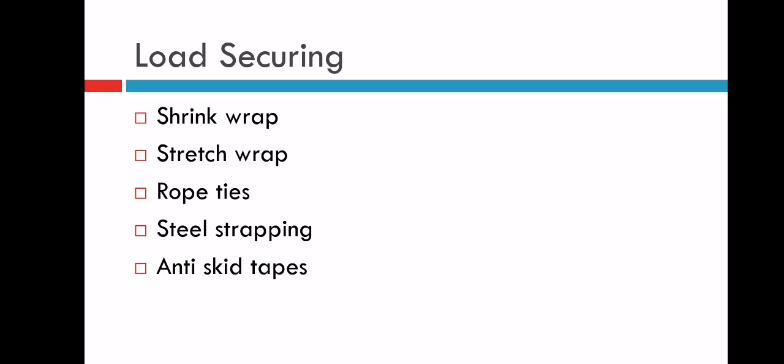Load securing: how we can secure the load by shrink wrap. You must have seen this, there is one wrapper which comes in a roll. When you wrap that roll over any product, it gets shrinked and attached to that product. It's transparent in nature, like a foil. Stretch wrap is like a band which can be wrapped around products. Rope ties, steel strapping, steel wire for strapping, and anti-skid tapes. Anti-skid tapes provide anti-slippery properties to cartons. If one carton is on top of another carton, they won't slip due to these anti-skid tapes.